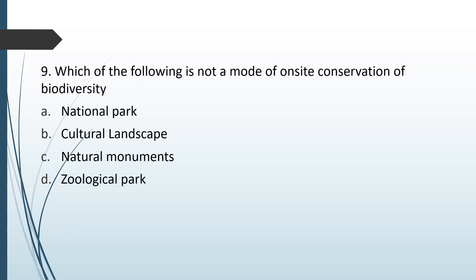Which of the following is not a mode of on-site conservation of biodiversity? National park, cultural landscape, natural monuments, zoological park. The correct answer is option D — zoological parks are not on-site conservation of biodiversity.